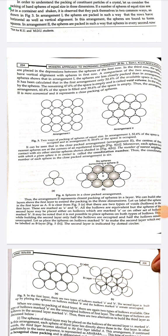In the third row the spheres have vertical alignment with the spheres in the first row. A comparison of the two arrangements shows that in arrangement one, only 52.5% of the available space is occupied and the remaining 47.5% empty space is called void volume. In arrangement two, 60.4% of the space is filled and 39.6% is empty. Thus arrangement two is more economical and represents a closer packing of spheres.